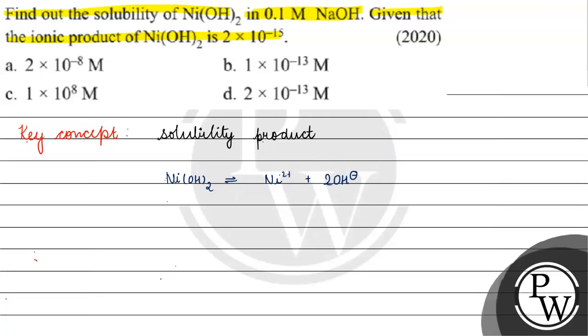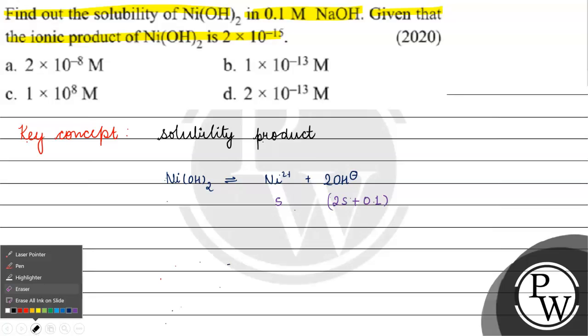For Ni²⁺, the solubility will be S. For hydroxide ions, the concentration will be 2S plus 0.1, because we already have 0.1 M hydroxide ion present from NaOH.